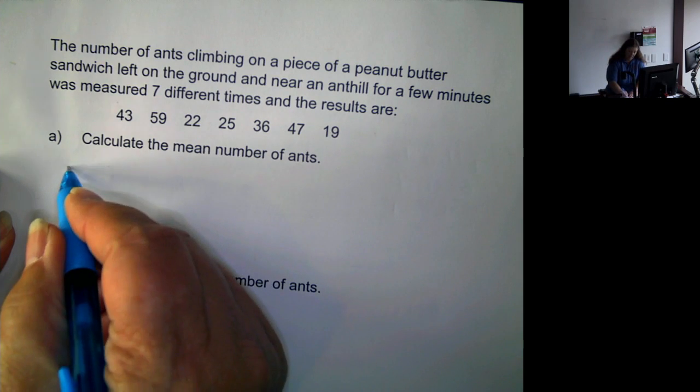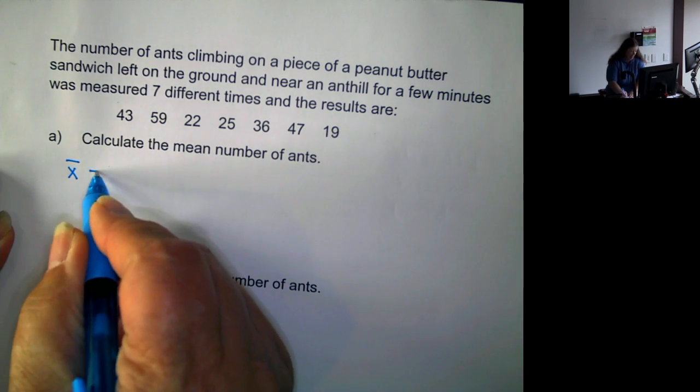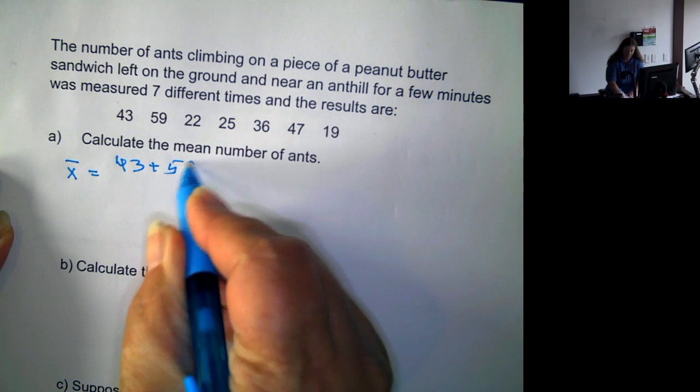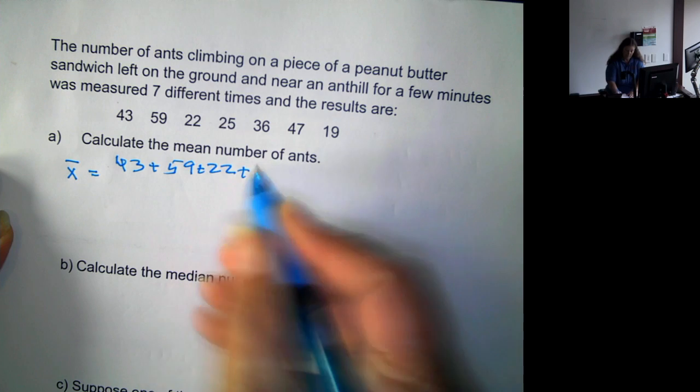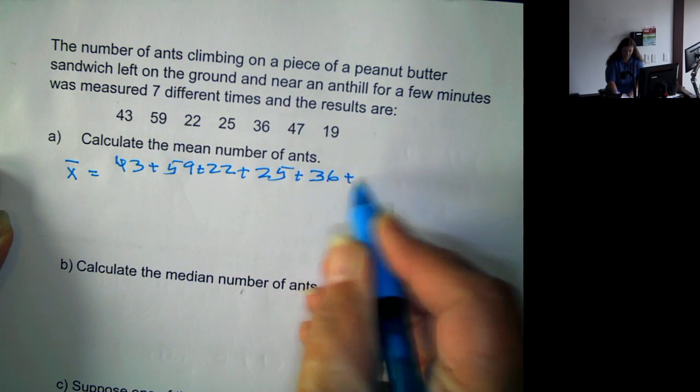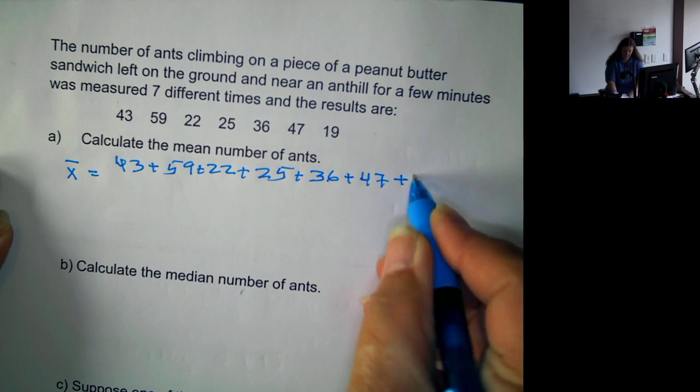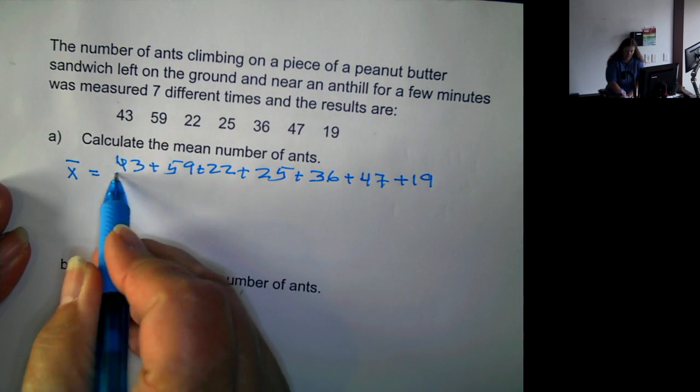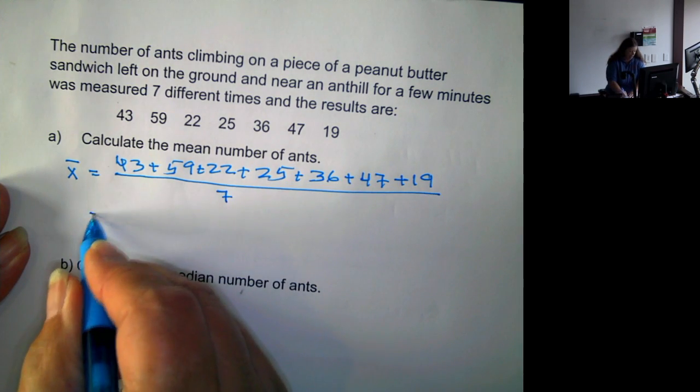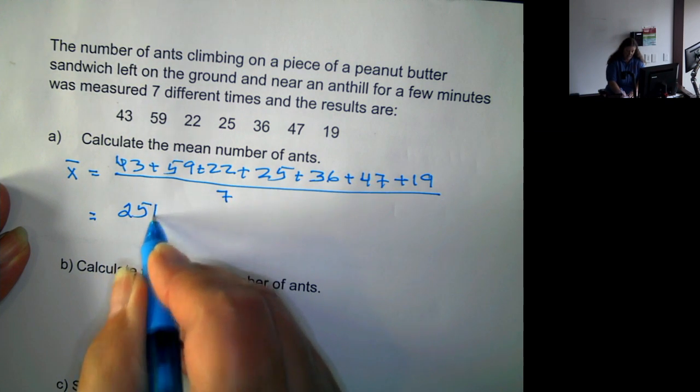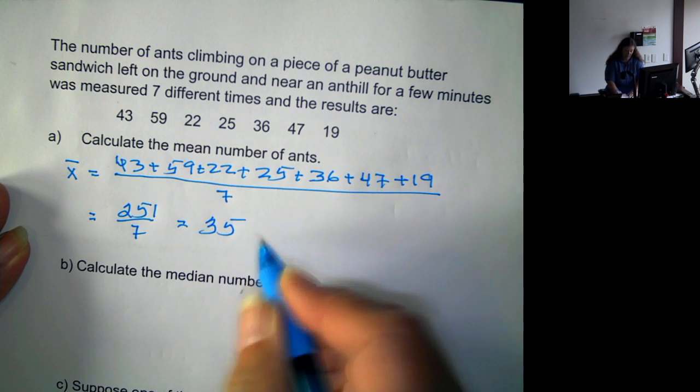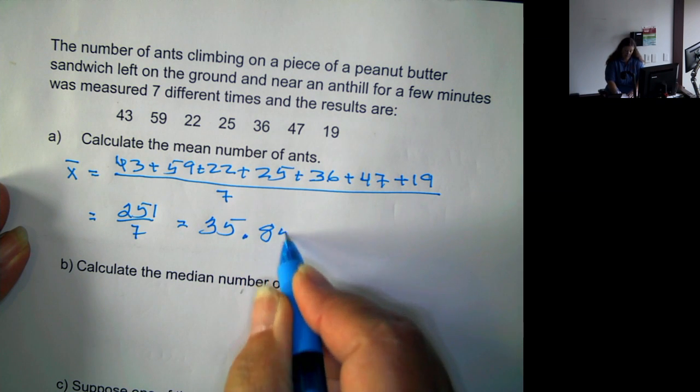So if we want to calculate the mean, the mean is simply the sum of all the values divided by the total number of values. So this adds up to be 251 over 7, which is 35.857.